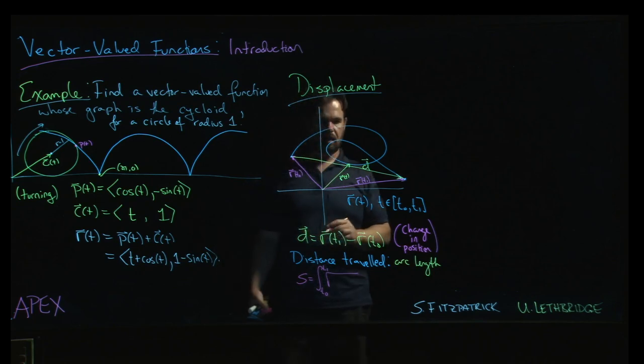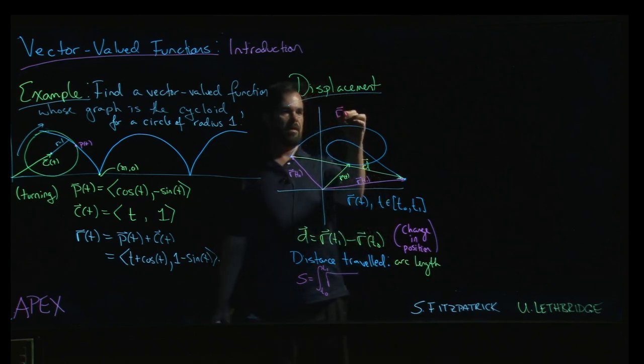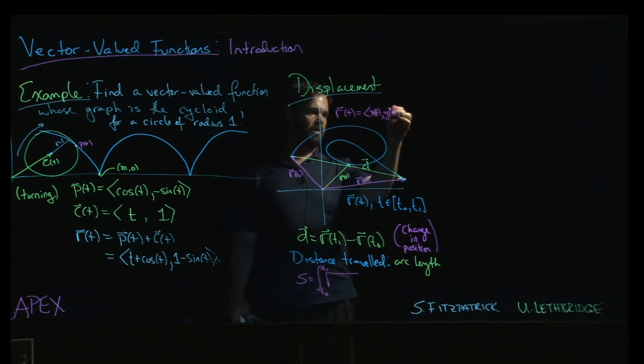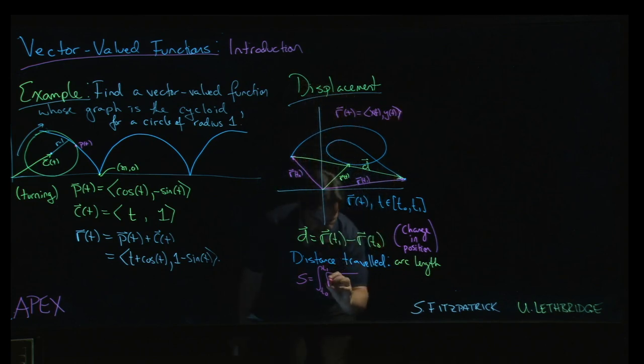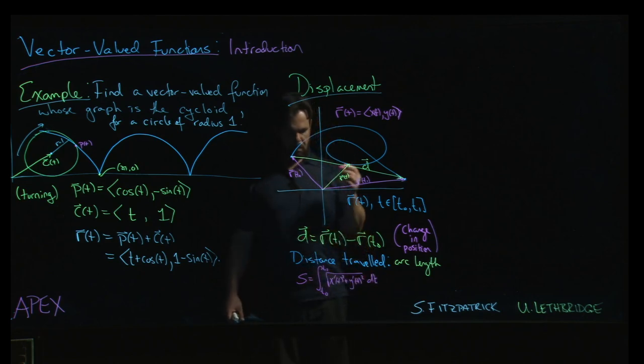And I guess we need to kind of maybe say that this r(t) is, say, x(t), y(t), vector valued. And so we've already seen, back in the chapter on plane curves, how to calculate that distance traveled.